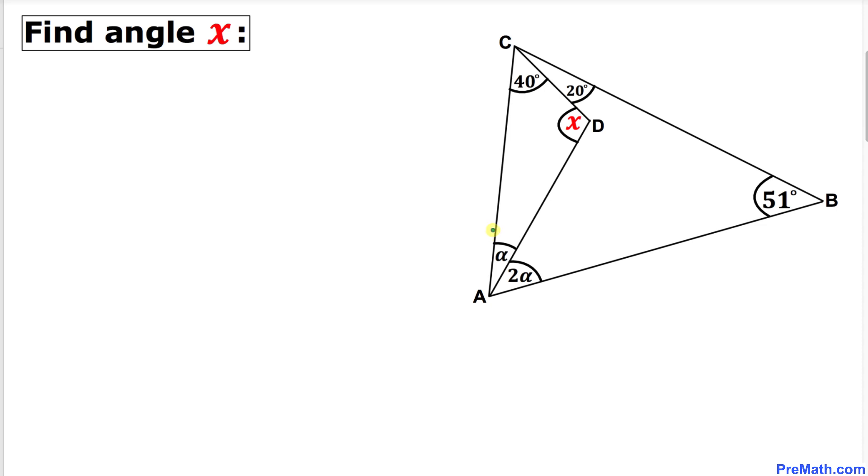Welcome to PreMath. In this video tutorial we have triangle ABC such that angle B is 51 degrees. Moreover, we have another triangle ADC inside this big triangle such that the angle at C is 20 degrees and 40 degrees respectively.